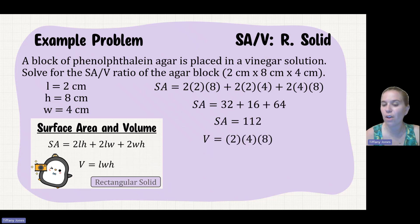We'll then sub in for our volume. So length times width times height, 2 times 4 times 8, which gives us 64. So our surface area to volume ratio is 112 over 64, which is 1.75.